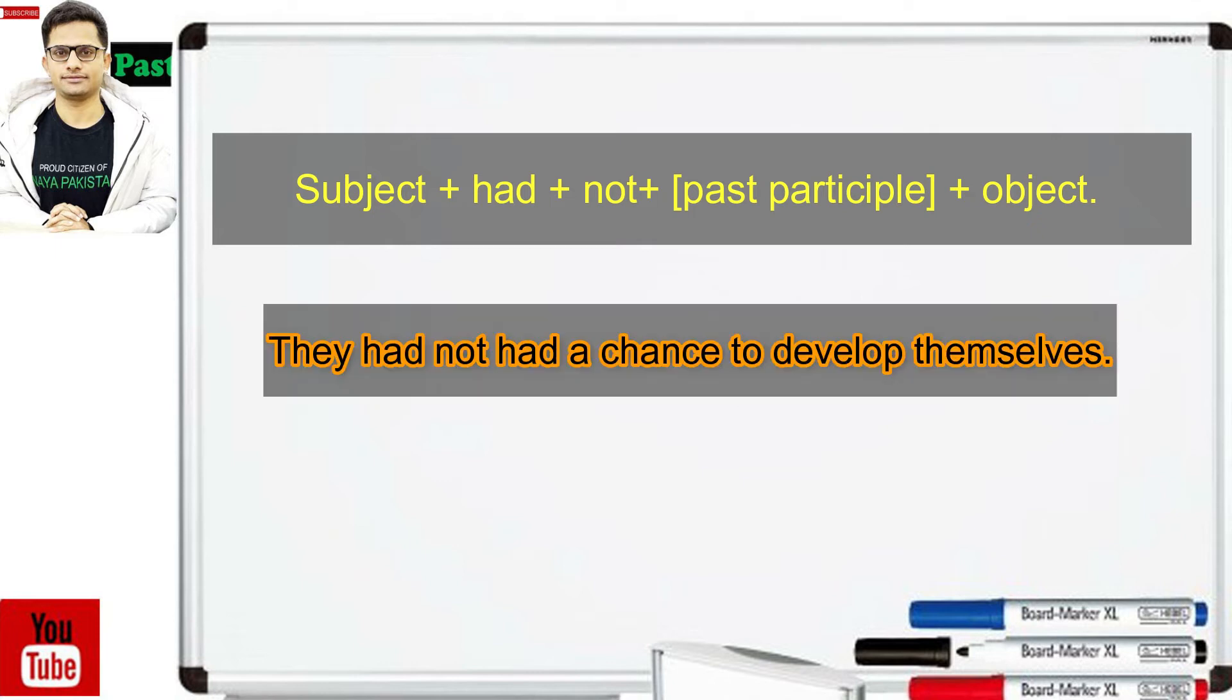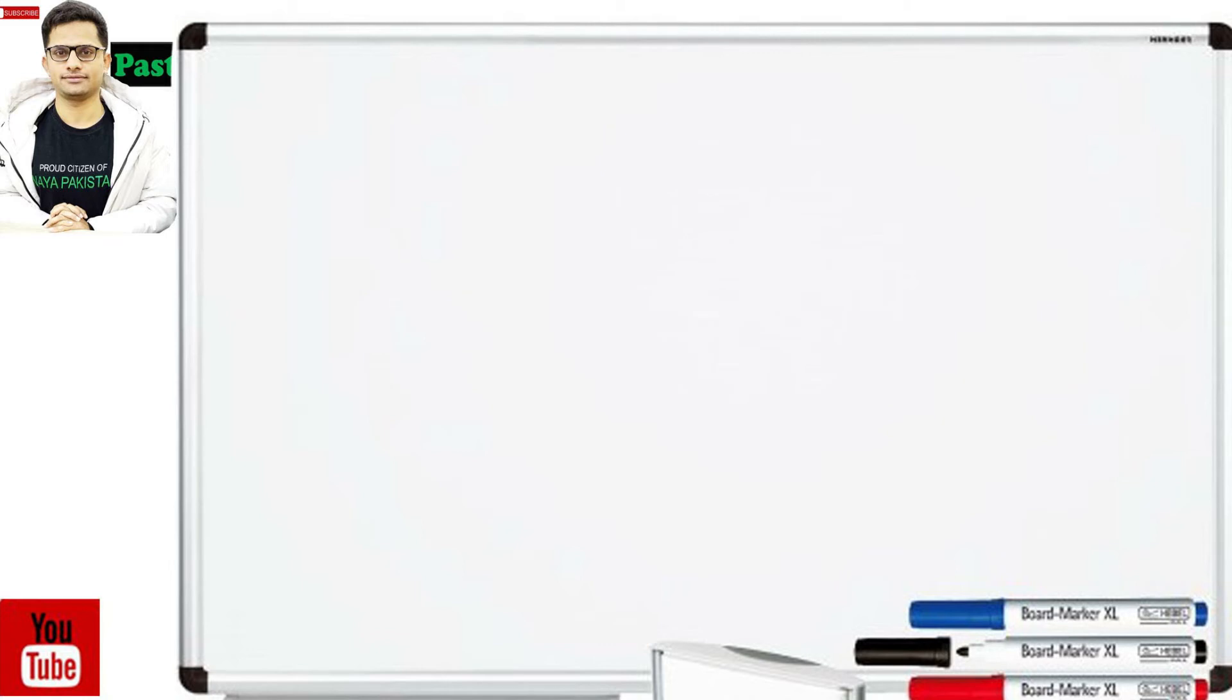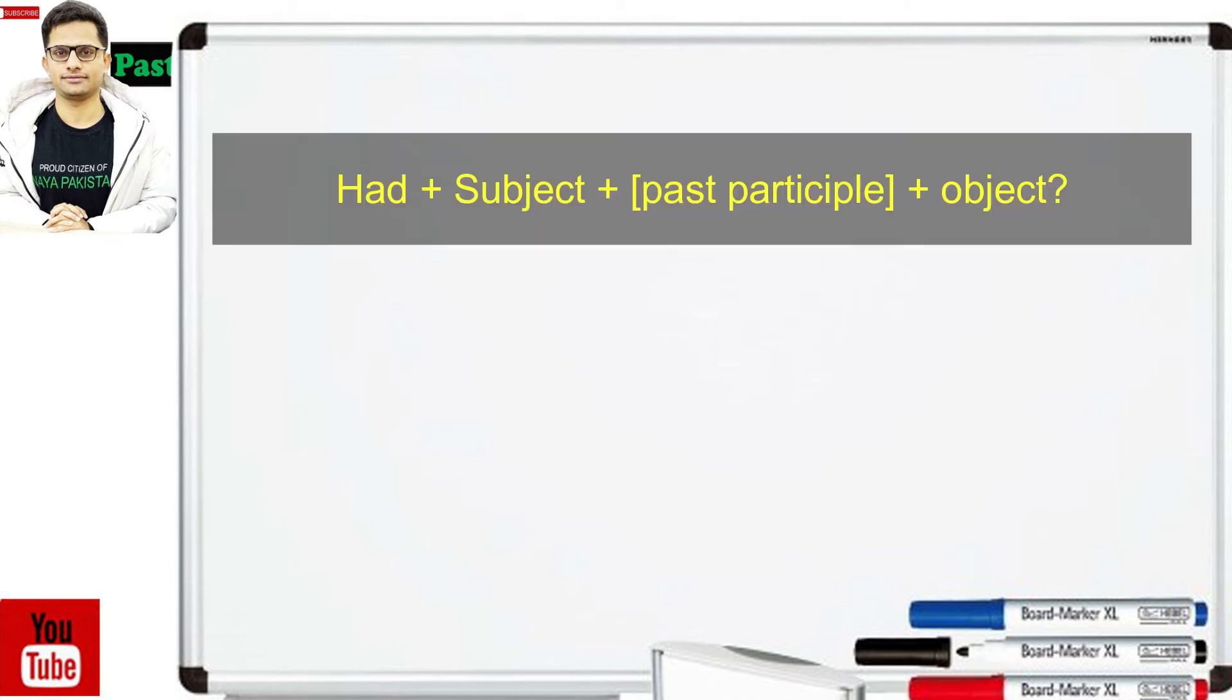Example sentence: they had not had a chance to develop themselves. For question sentences we replace the subject and auxiliary verb had. Had plus subject plus past participle plus object. Had you ever met him before?